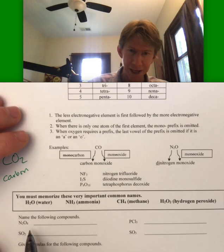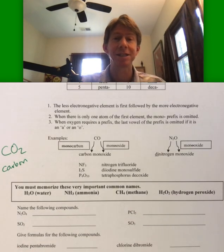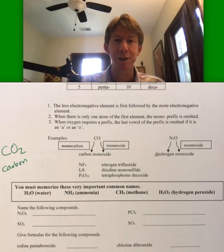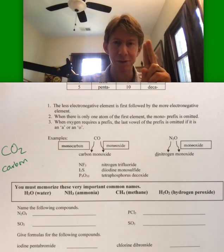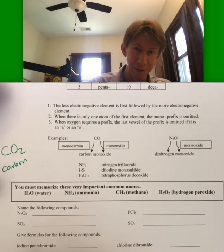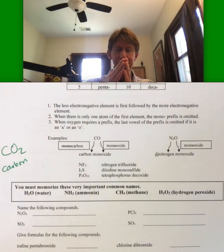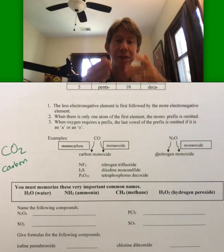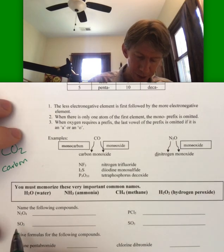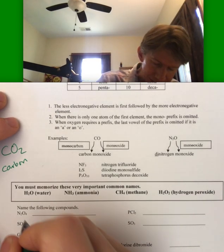Now name the following compounds. So my process for this is I look for a metal. I don't see a metal. I don't see ammonium. That means this is a molecular or covalent compound. That means I need number prefixes. So that's our process, we're sorting the ionic ones from the covalent ones, and then we're using each naming scheme. So N2O4, that's two non-metals. That's going to be dinitrogen.